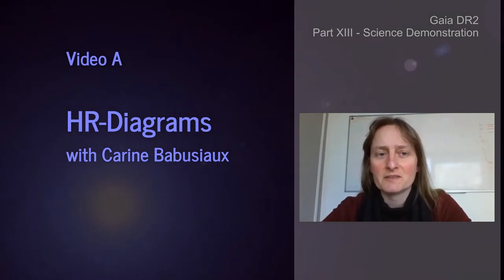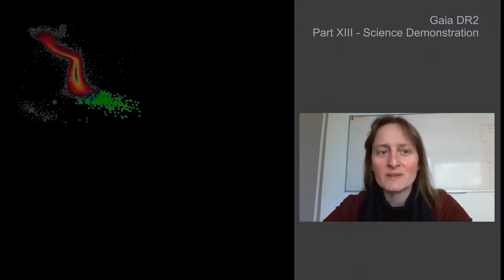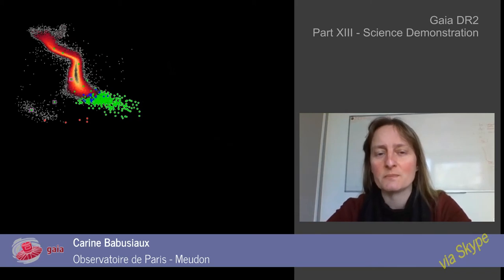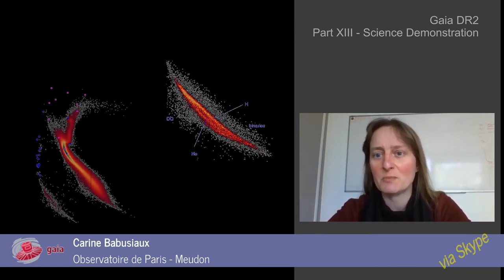The precision, the density, and the homogeneity of Gaia DR2 astrometry and photometry are unprecedented. From those data, one does not build just one but many different Gaia HR diagrams depending on the stellar population selections.